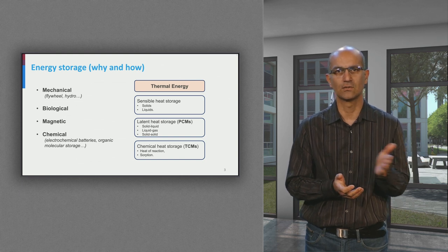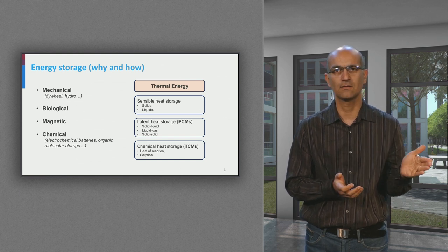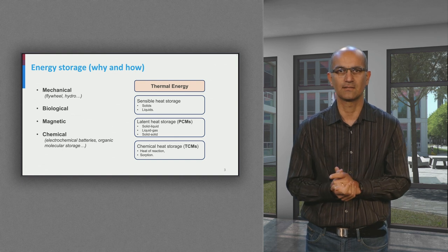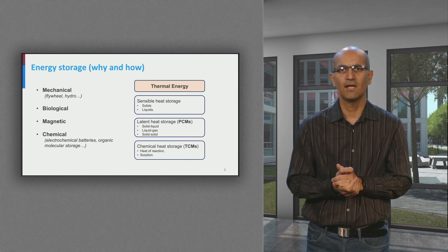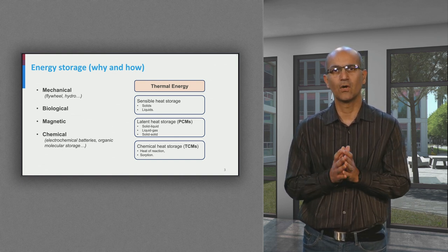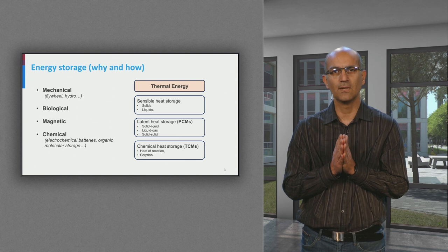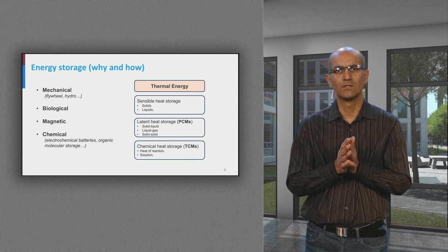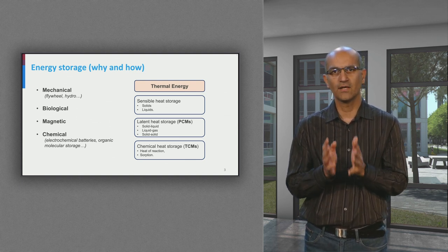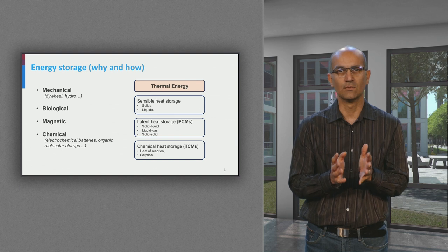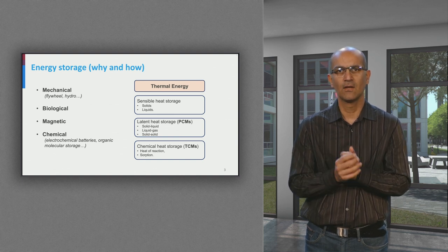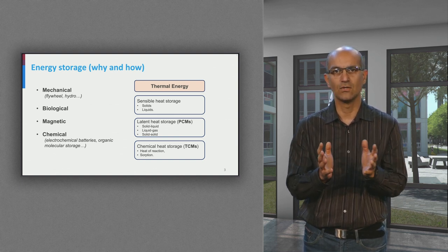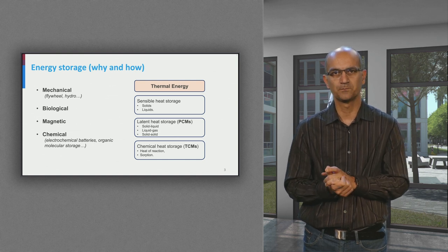Wind blows and sun shines on a certain pattern which we cannot control, though we can predict those patterns. Therefore, we need to be prepared to provide thermal stability for our devices. Also, we can generate more than we need at times. As opposed to curtailment, we can store this excess energy and use it later when we need it more.